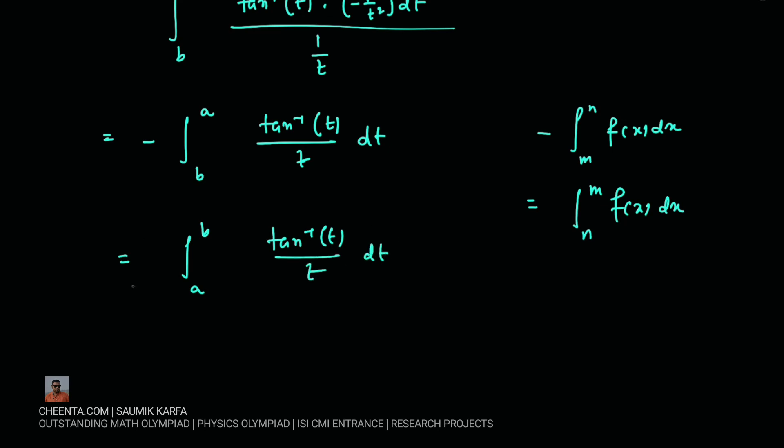Now this is nothing but exactly same as our original integration, original integral I. So if we go back to our original integration I again, so I was equal to the first part minus the second part.